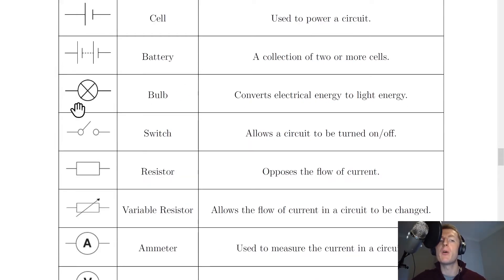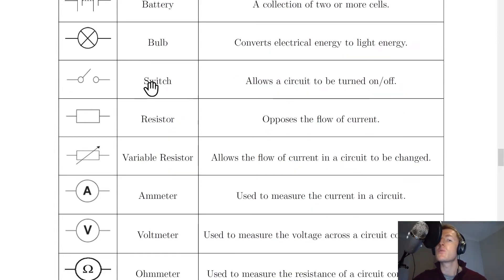Next we have a bulb. And the bulb is just a big circle with a cross in it. And this converts electrical energy to light energy. Moving on we have the switch. So the switch can either be drawn with these little circles with a line that goes up. This would show an open switch. And a closed switch would just be where that line is horizontally flat. But you might also see this switch without the little circles and just as a line that goes up and a line that can be moved down. And the switch quite simply allows a circuit to be turned on and off.